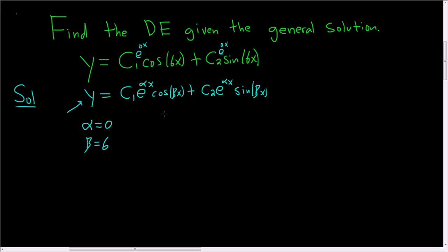And this solution arises from roots of the form alpha plus or minus beta i. So we have 0 plus or minus 6i. These are the roots of the characteristic equation.